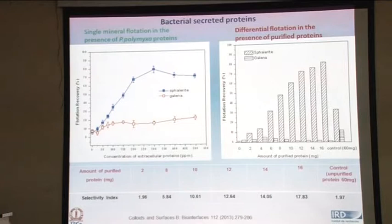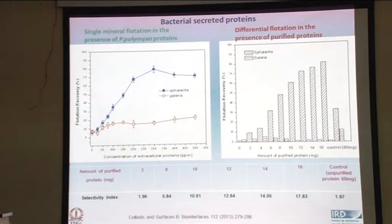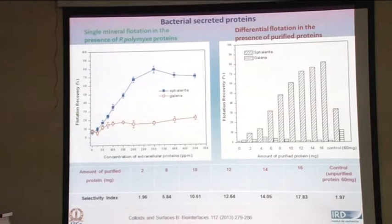The results are shown here with respect to flotation of sphalerite and galena. The same cells or the extracellular proteins are able to float sphalerite better than galena. The flotation recoveries are about 70-75% for sphalerite, whereas it is below 15-20% for galena.